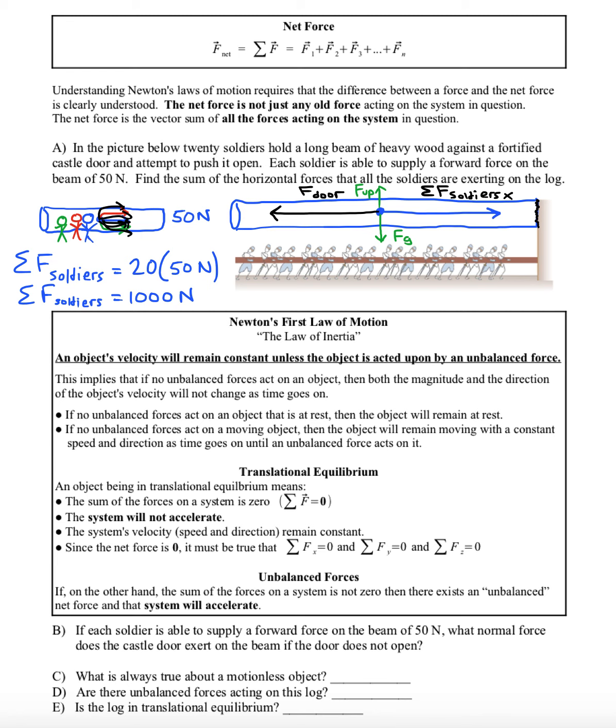The term translational equilibrium means the sum of the forces acting on a system is zero. The system does not accelerate. The system's velocity, both speed and direction, remain constant. And since the net force acting on this system must be zero for it to be in translational equilibrium, that will mean that the sum of the forces in the x direction is zero, the sum of the forces in the y direction is zero, and even the sum of the forces in the third dimension z are zero as well.